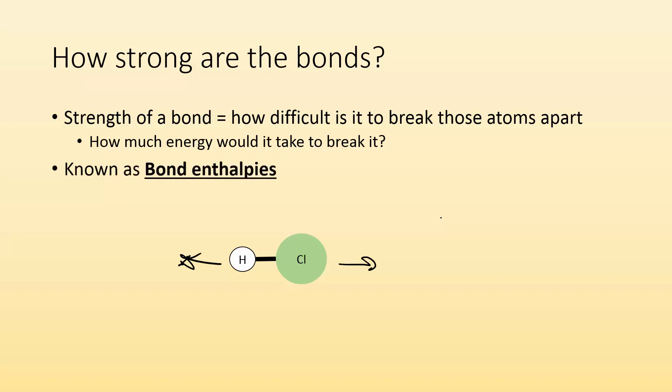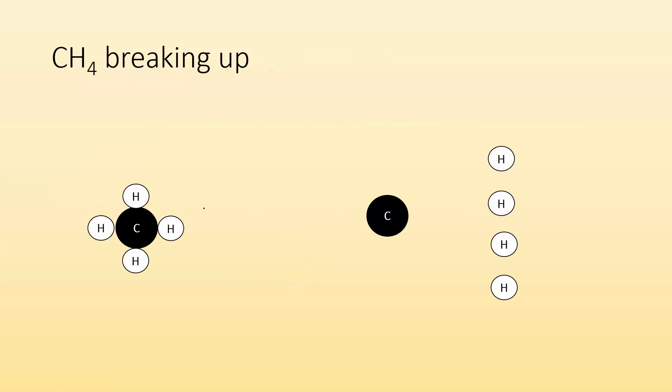And that amount of energy we call bond enthalpies. Enthalpies, we're talking about energy, and it's for the bond. So how much energy we've got to put in to break that bond? And these are always positive. These are always positive values. It takes energy to break things apart. Remember that.